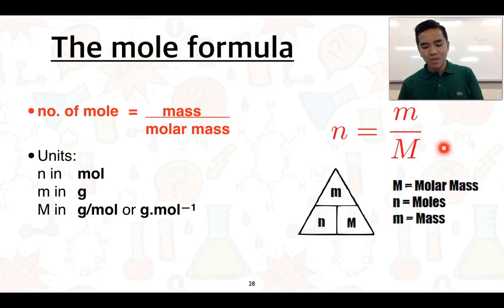We can take that formula and summarize it: n equals little m divided by big M. This triangle shows you how to solve for any one of those three aspects. Keep in mind we can always work out the molar mass, and we can simply cover whichever one we're trying to work out and see what we're left with.